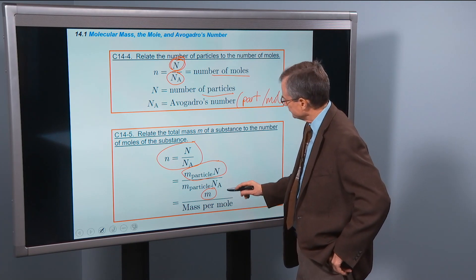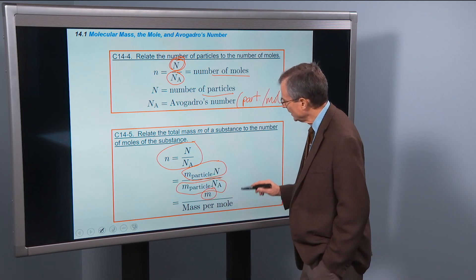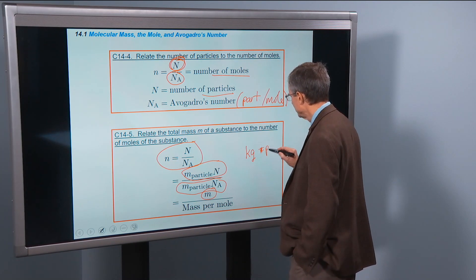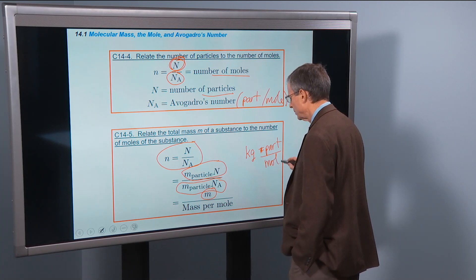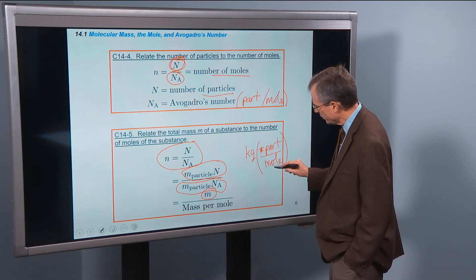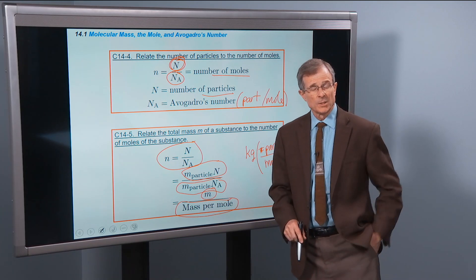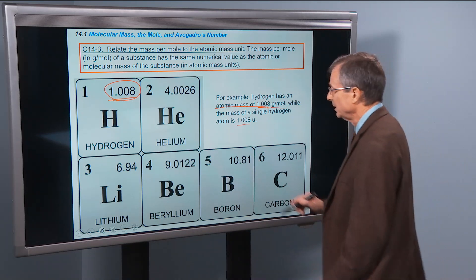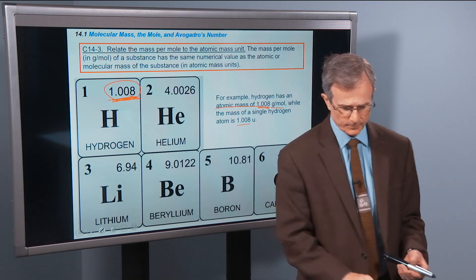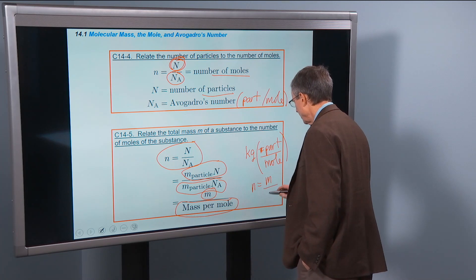So this product of the mass of the particle times the total number of particles is just the total mass of the substance that you have. The denominator is the mass of the particle times Avogadro's number. This is the mass of a particle measured in kilograms times the number of particles per mole. That gives you something kilograms per mole. So this gives the mass per mole of that substance, which is what you read off the periodic table.